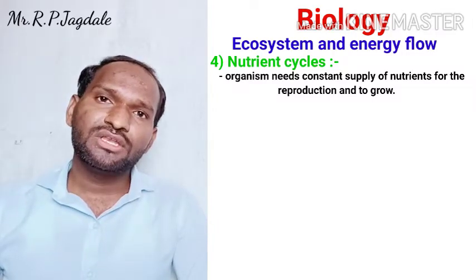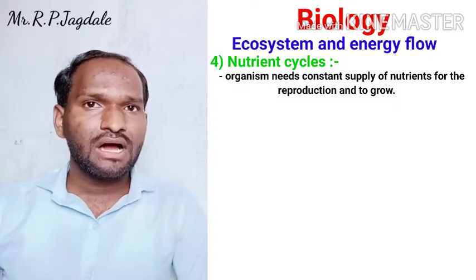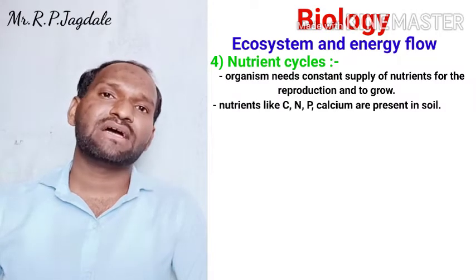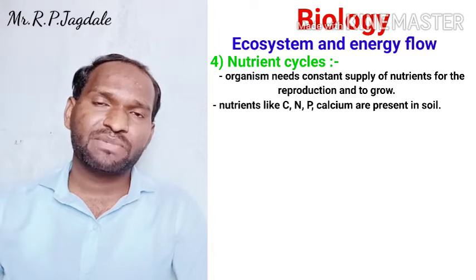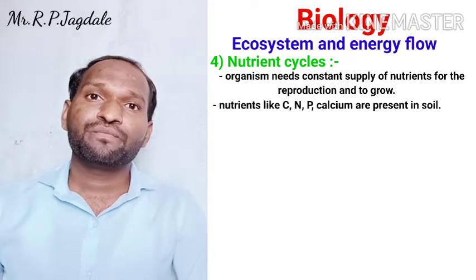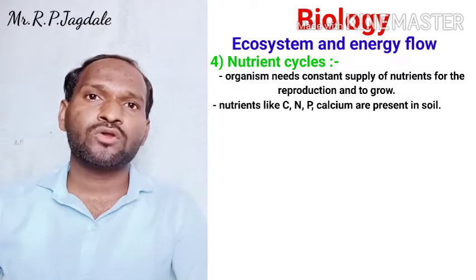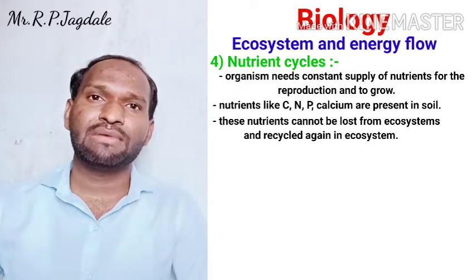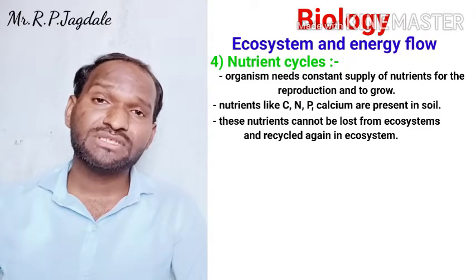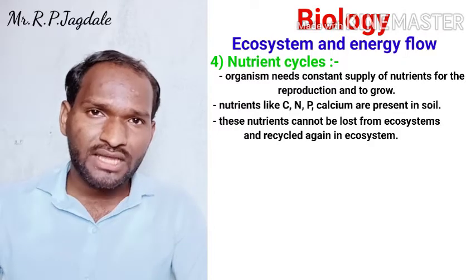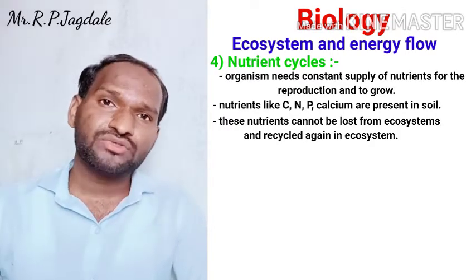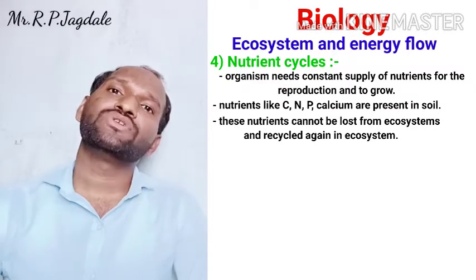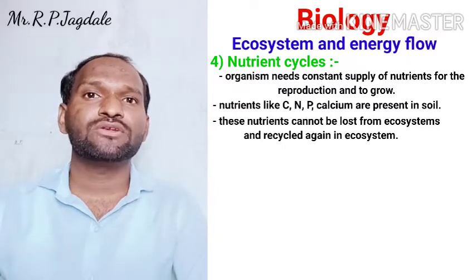Generally, the nutrients present in the soil and atmosphere include carbon, phosphorus, calcium, and nitrogen. These nutrients cannot be eliminated or lost from the ecosystem. Carbon, phosphorus, and calcium are not lost — they go through recycling again and again, passing from one organism to the next and back again.